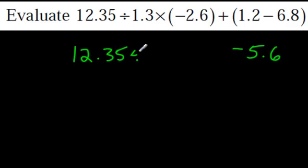1.2. I'm using a calculator here, just because I'm being lazy here. 1.2 minus 6.8. All right, I've got negative 5.6. All right, this became that. So, I'm just going to write everything else down.